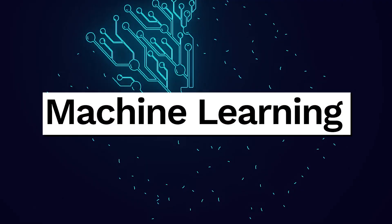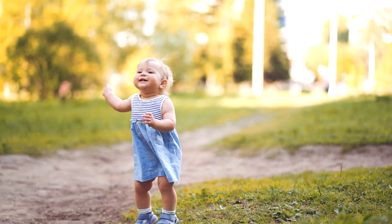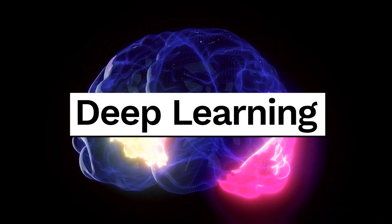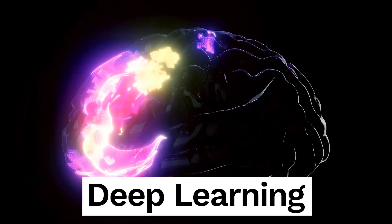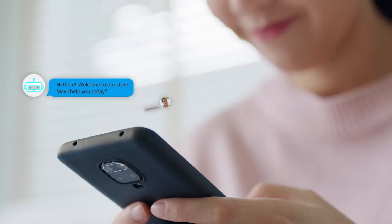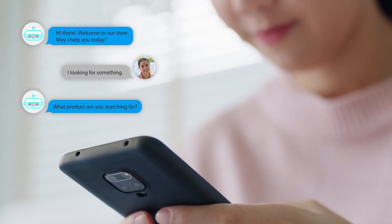Now let's break down some AI terms that you might have heard before — I'll keep it simple. First up, we have machine learning: think of it as the method AI uses to learn from data, much like a child learning from experiences. The more data it gets, the better it becomes. Next, there are neural networks, which are inspired by our own brains — basically a series of interconnected nodes that work together to process and understand information. Another term is deep learning, a more advanced form of machine learning that uses multiple layers of neural networks to learn even more complex patterns. And lastly, we have chatbots — AI-powered agents that can understand and respond to your questions in a human-like way.